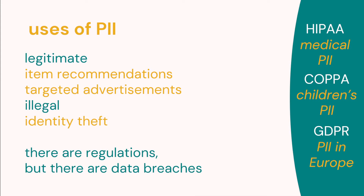Why is PII used? Well, legitimately it can be used to recommend items that you might be interested in — if you buy a certain item, sellers can know your shopping interests and recommend similar items. Other uses are illegal, including identity theft. There are regulations for medical information and children's identification data, but there are also data breaches. In fact, I recently got an email saying a hobby-related site had a data breach, so my username and password might have been hacked. I went into other accounts with similar credentials and changed them. If you get notified of a data breach, it's a good idea to change your username and password.